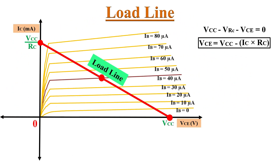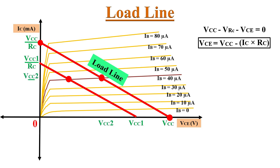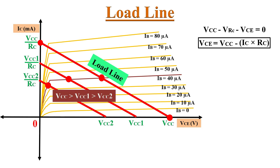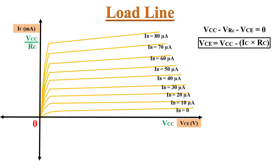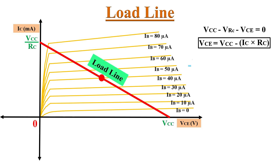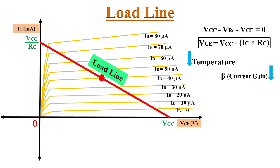If we change VCC while keeping IB and RC fixed: reducing VCC to VCC1 shifts the Q point and load line. Reducing further to VCC2 shifts the load line again. So, reducing VCC shifts the load line to the left. Now, for given VCC and RC, if the temperature changes, the operating point also changes, because with increasing temperature the beta or current gain of the transistor increases, and with decreasing temperature the beta gain decreases.